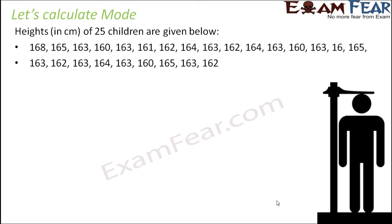In order to calculate mode, first we need to organize this data in a tabular form. We arrange the data in increasing order. Whenever we have to calculate mode, we do not write the repeating data over and over again. Instead, we write everything once and then write their frequency using tally marks.